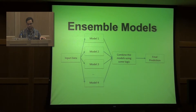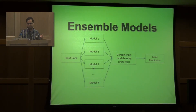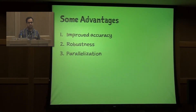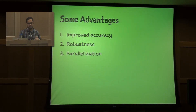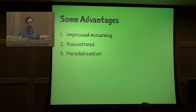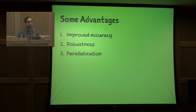An ensemble model works by taking input data, fitting different kinds of models, and then combining those models to get a final prediction. In your normal approach, you just have one input, one model, one output. With ensembles you do a lot more. The advantages are improved accuracy — more often than not it gives better accuracy — and it's robust. It works on the variance part, reducing variance. Most importantly, the process is parallelizable, so it helps you run a lot of experiments and get a lot of models.